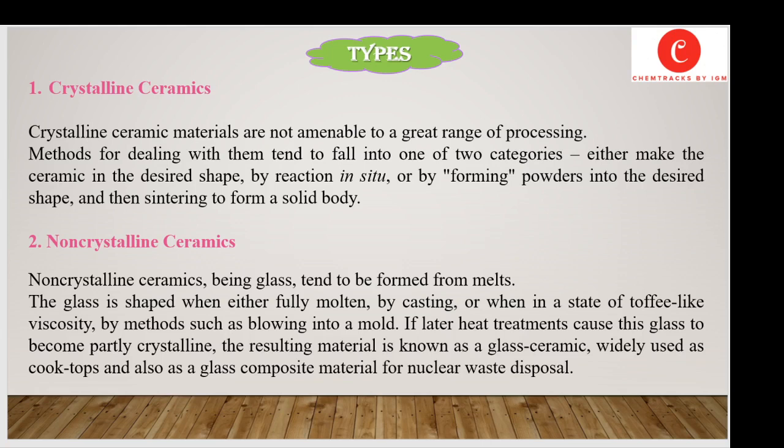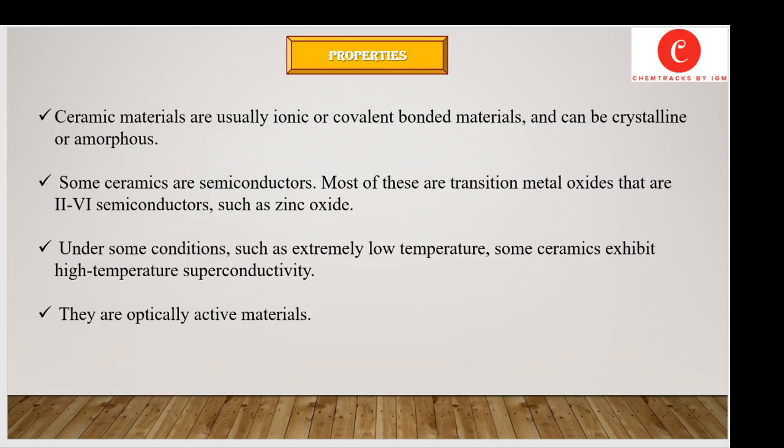The second type of ceramic is non-crystalline ceramics. Non-crystalline ceramics, being glass, tend to be formed from the melts. The glass is shaped when either fully molten by casting, or when in a state of toffee-like viscosity by methods such as blowing into a mold. If later heat treatments cause this glass to become partly crystalline, the resulting material is known as glass ceramic, widely used as cook tops and also as a glass composite material for nuclear waste disposal.